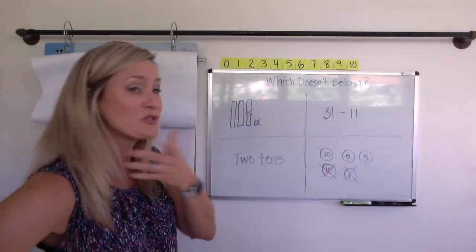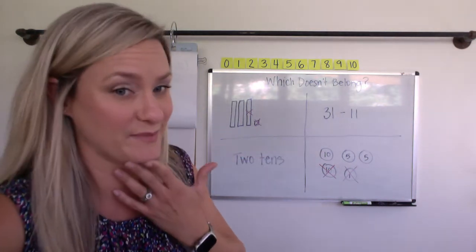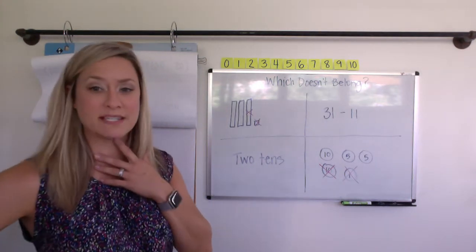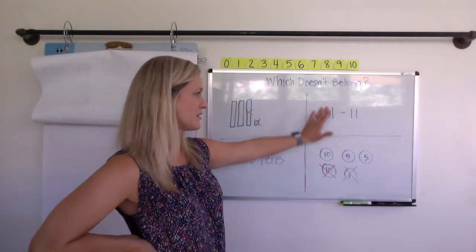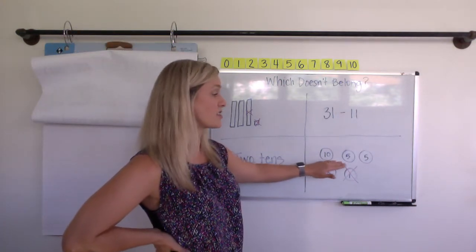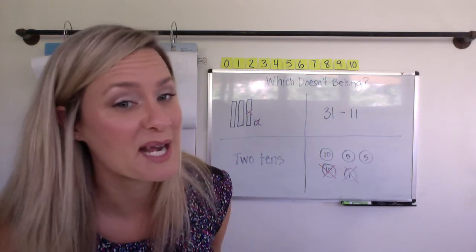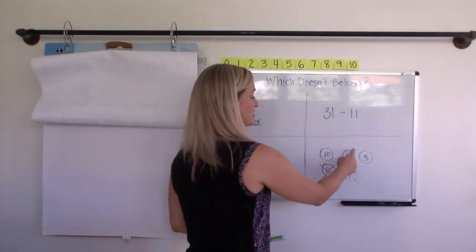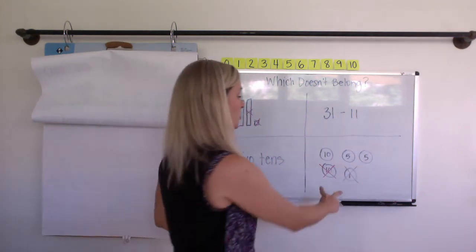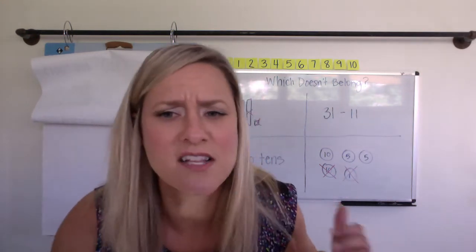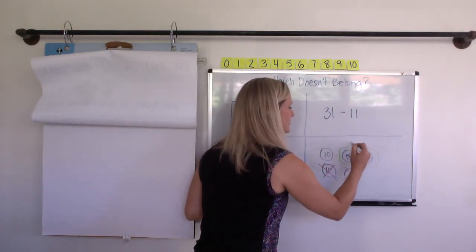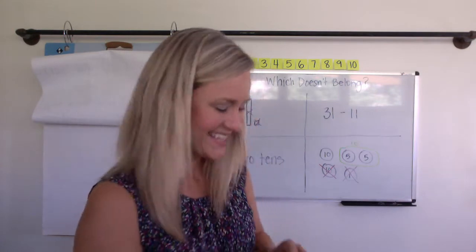Which one doesn't belong? You just, there's no wrong answer. You just have to give me your reason. Okay, so let's check this one out. Maybe somebody would say, this one doesn't belong. So the bottom right doesn't belong because maybe they're saying there aren't two tens. But there's a 10 and a 5 and a 5 left, right? So we started with 31, crossed off 11. But two tens aren't left. A 10 and two 5s are left. So maybe somebody would say, if you put this into a 10, it would belong. Maybe.